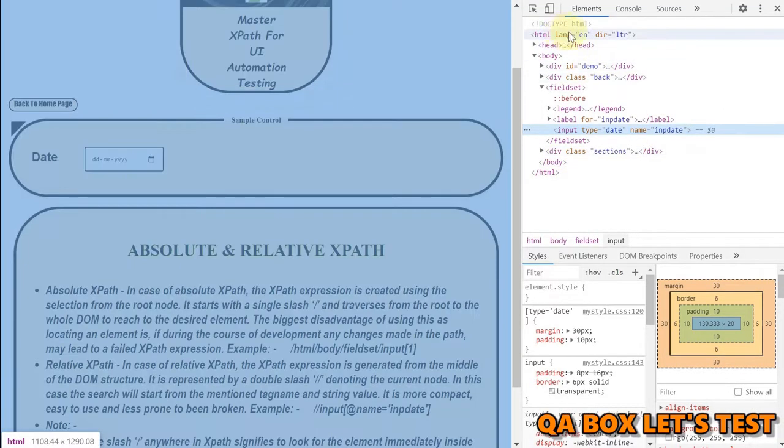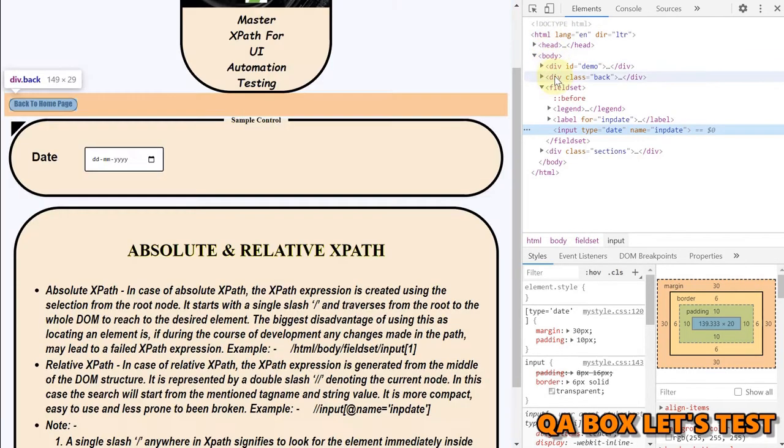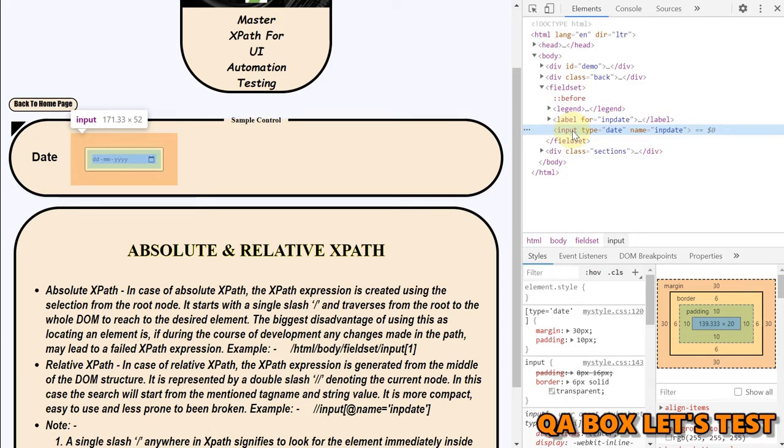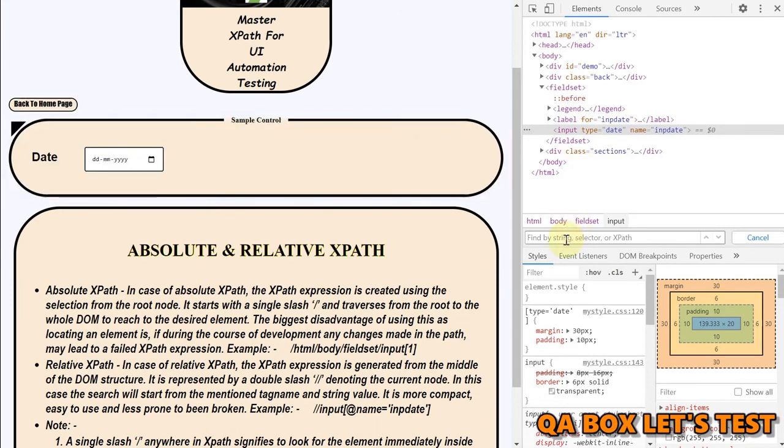Let me inspect this. This is what I want to find. As you could see, we have the HTML, then we have body. Inside that, we have the fieldset, and then we have this input. This is what I want to find. And this is Chrome browser, by the way. So I've done Control F to bring in this box.